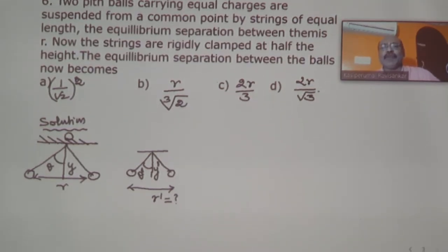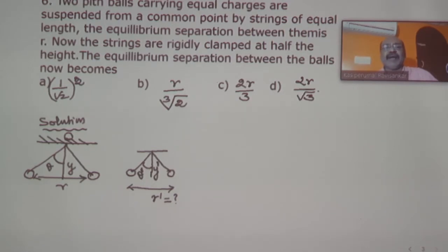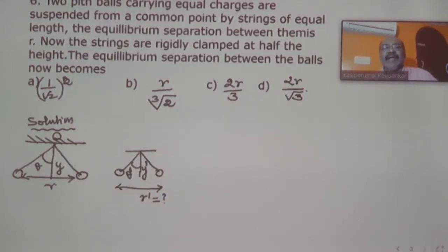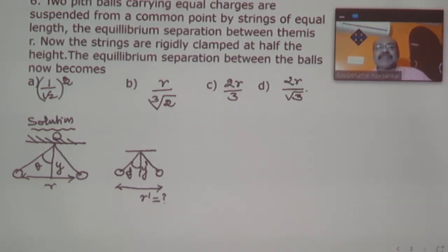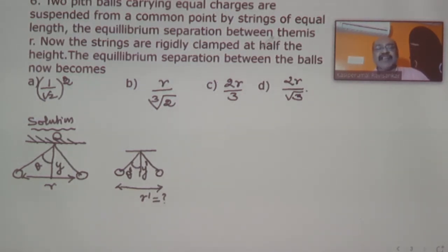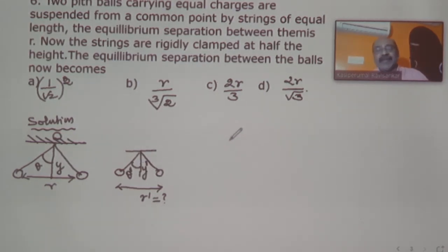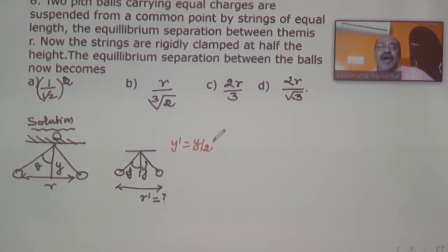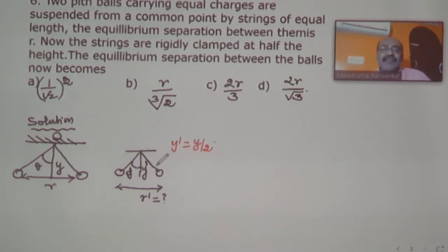Problem number six: two big balls carrying equal charges are suspended from a common point by strings of equal length. The equilibrium separation between them is r. The strings are then rigidly clamped at half the original height, so y-dash equals y divided by two. What is the new equilibrium separation between the balls?